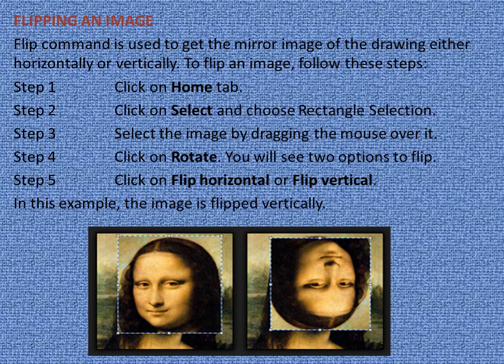Let us learn about flipping an image. The Flip command is used to get the mirror image of the drawing, either horizontally or vertically. To flip an image, follow these steps. Step 1: Click on Home tab. Step 2: Click on Select and choose Rectangular Selection. Step 3: Select the image by dragging the mouse over it. Step 4: Click on Rotate — you will see two options to flip. Step 5: Click on Flip Horizontal or Flip Vertical. In this example, the image is flipped vertically and you can see it looks opposite.